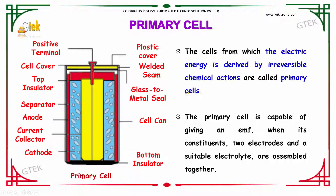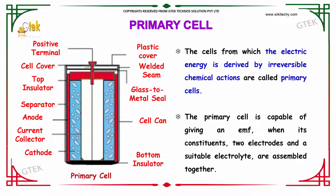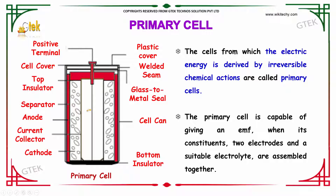The cells from which the electric energy is derived by irreversible chemical reactions are called primary cells. The primary cell is capable of giving an EMF, a current, when it is in contact with the two electrodes and the electrolyte, which are assembled together.